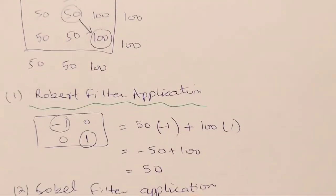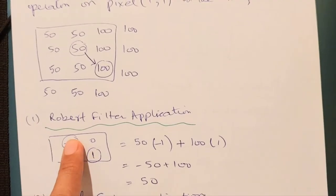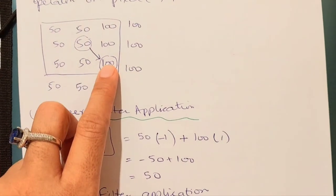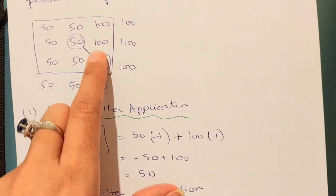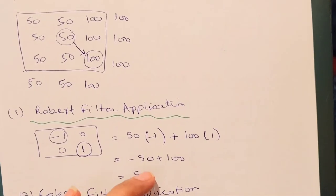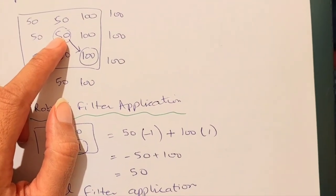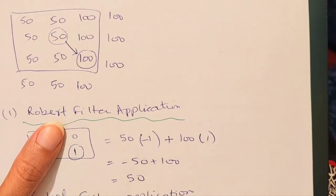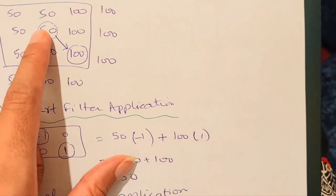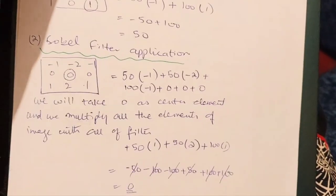Let's start by applying the Roberts filter, which is the simplest one. The values only appear in the form of cross gradients. Placing minus-one and one at the diagonal positions: 50 is multiplied by -1 and 100 is multiplied by 1, giving an answer of 50. Since the result is already 50, no change is needed. If the answer were different — say 30, 20, 60, or 90 — then of course we would replace the center pixel value.